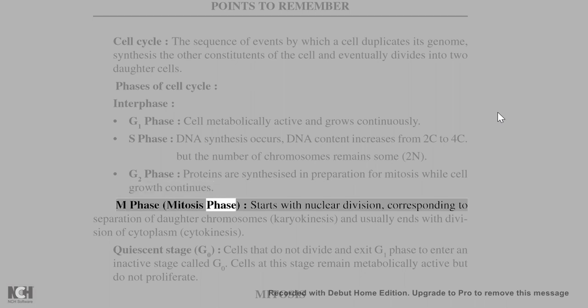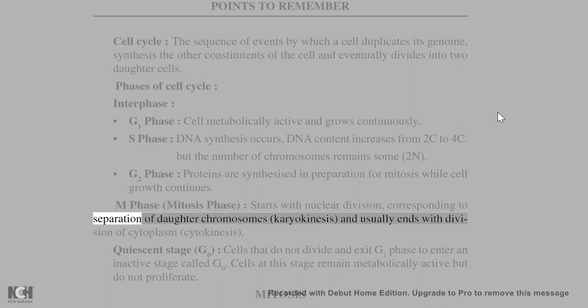M phase (mitosis phase) starts with nuclear division, corresponding to separation of daughter chromosomes (karyokinesis), and usually ends with division of cytoplasm (cytokinesis).